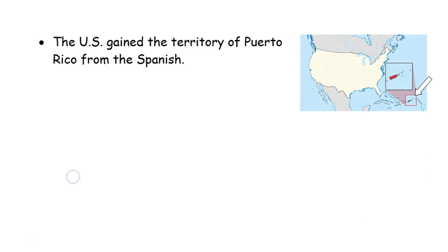While the United States did not take ownership of Cuba, they did take ownership of some other Spanish territorial possessions. One of them is one that some of you might be familiar with — maybe you've visited before. This is another island in the Caribbean: the island of Puerto Rico. Puerto Rico becomes a territory of the United States. It still is a U.S. territory today, and many of you maybe have spent vacation there.